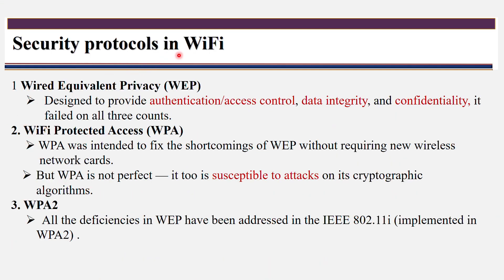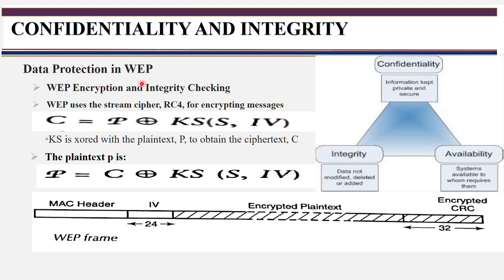Next, security protocols in Wi-Fi. There are three protocols available. In these protocols there are some loopholes. To overcome the loopholes in WEP (wired equivalent protocol), Wi-Fi Protected Access (WPA) was introduced. To overcome the loopholes of WPA, WPA2 was introduced. Let's see what problems arise with these security protocols one by one. There are loopholes in WEP, relating to confidentiality and integrity.